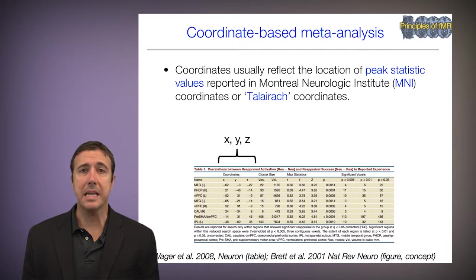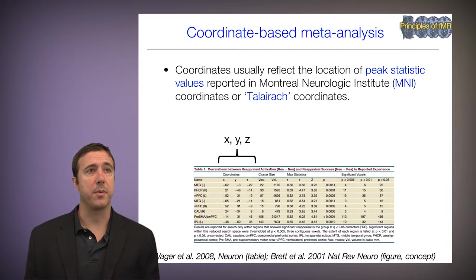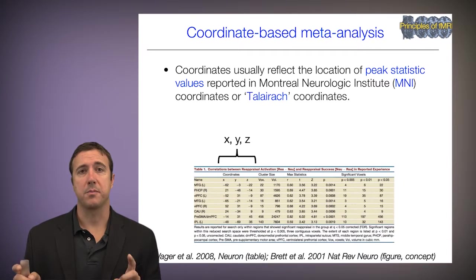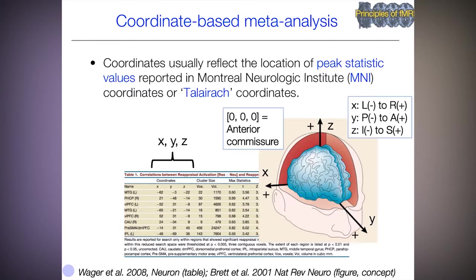Coordinates usually reflect the location of peak statistic values, and they're often reported in Montreal Neurological Institute space — MNI space — or what's called Talairach space, which is an approximation similar to MNI space but less precisely defined. The X, Y, and Z coordinates refer to coordinates in brain space. The zero point is the anterior commissure, the small commissure that connects the hemispheres. X is left to right, Y is posterior to anterior, and Z is inferior to superior by convention.